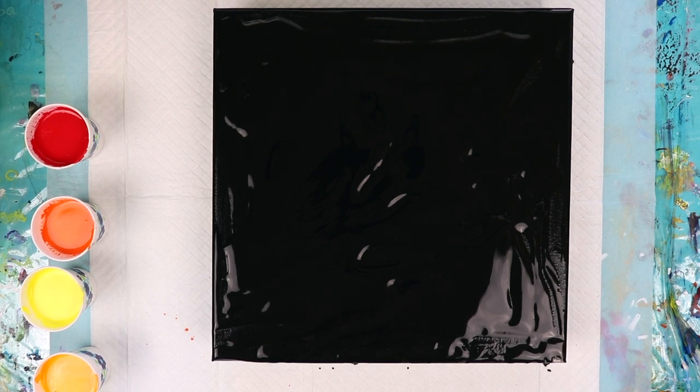Hi everybody, Lisa here. Today I'm going to be doing a Dutch pour on a 12 by 12 stretch canvas. I've already put a base layer of black paint onto the canvas. I'm going for a fire or flame effect today.